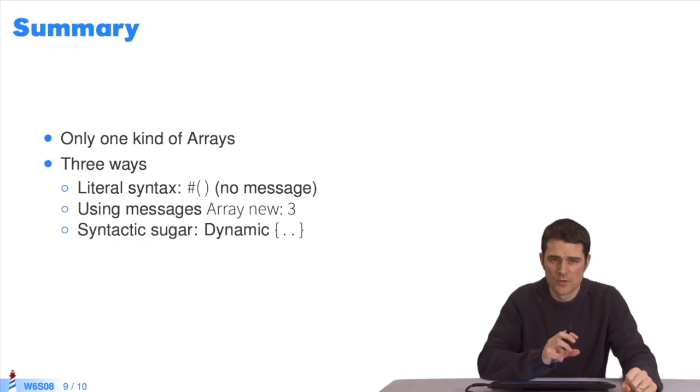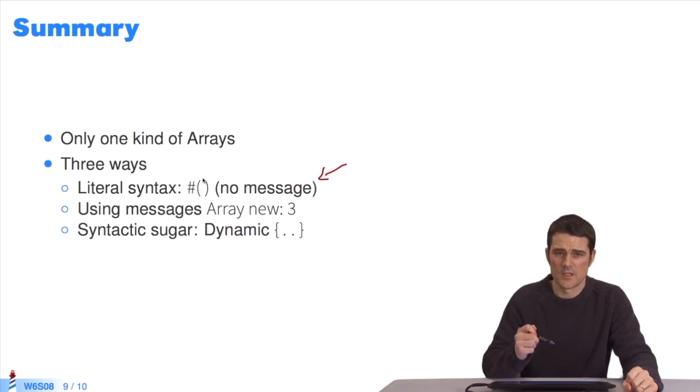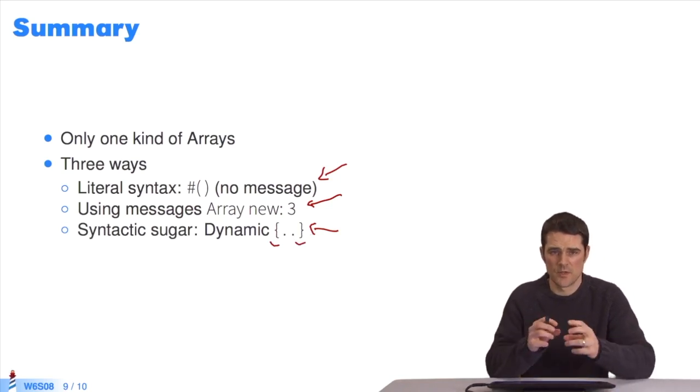What's important to remember is that we have one single type of array in Pharo. The array class and its instances. But there are various ways to obtain instances and create arrays. The first way is literal syntax, hashtag parentheses. Be careful. Arrays are created by the compiler at compile time. We have the simple dynamic form, array new. I send the message new to the array class. And we have another more syntactically compact dynamic method with braces before and after, and expressions separated by dots, that are evaluated to create an array.